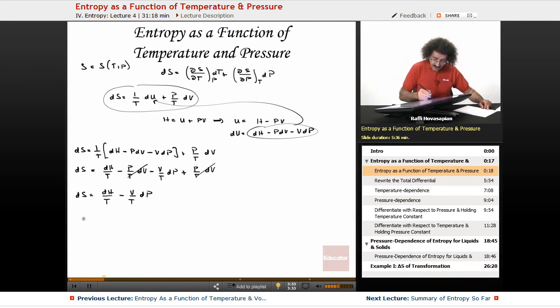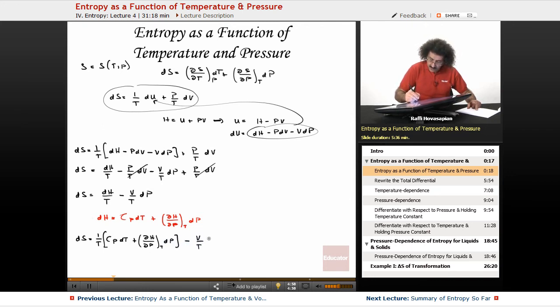From our discussion of energy, we had dh equals Cp dT plus (∂h/∂P) at constant T times dP. Now, I'm going to substitute this expression for dh into our entropy equation. We get ds equals (1/T) times (Cp dT plus (∂h/∂P) at constant T times dP) minus (V/T) dP.